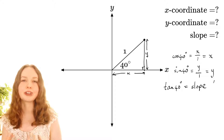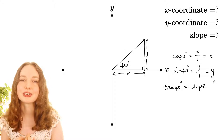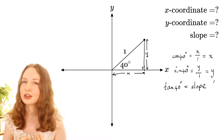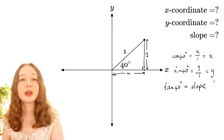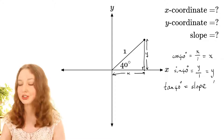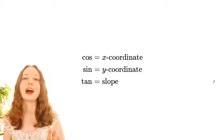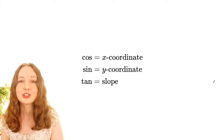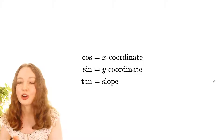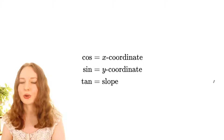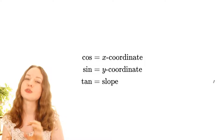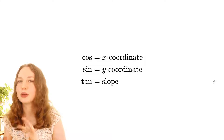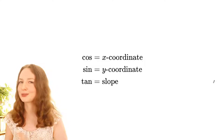So we have: cos 40 is the x-coordinate, sine 40 is the y-coordinate, and tan is the slope. This is going to form our new definitions for sine, cosine, and tan. Where previously these were only defined for acute angles, now we can use these new definitions for all angles - whether they're obtuse, reflex, negative, or whatever. So memorize these new definitions: cos is the x-coordinate, sine is the y-coordinate, tan is the slope. This applies to points that are a distance of 1 from the origin, with angles measured in a certain way which I'll explain in a moment.